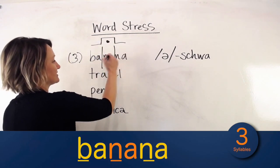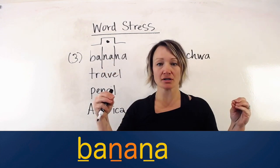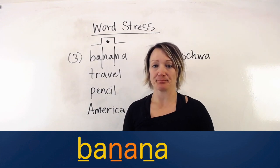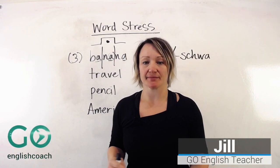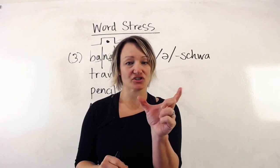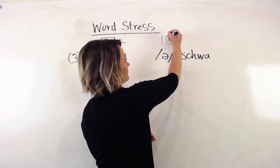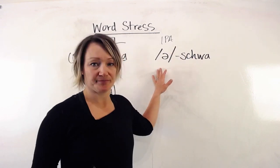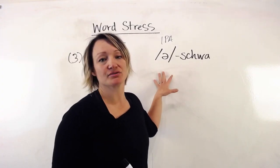It's in that second syllable: ba-NA-na. So we're stressing this syllable — saying it longer, louder, and more clearly. Even though we have three A's, the unstressed ones are pronounced differently: 'buh... nah... uh.' That 'uh' sound is a short sound where your mouth is very relaxed, and we call it a schwa. The phonetic symbol for that sound in the IPA is 'ə.'